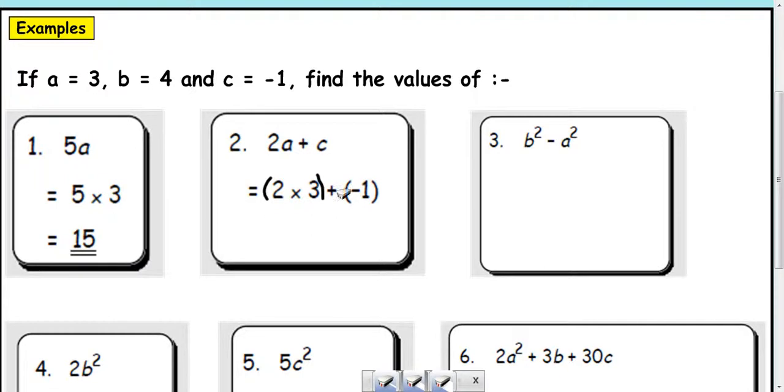So, 2 times 3 is 6. And if I add negative 1, I get 5. There would be no harm in doing an extra line here, doing 6 take away 1 if you wanted to.